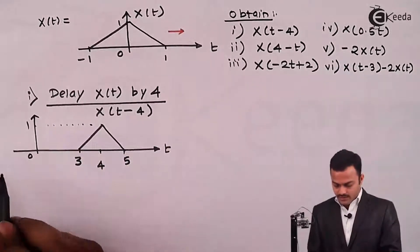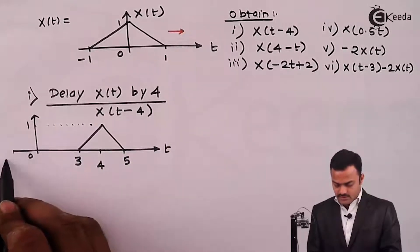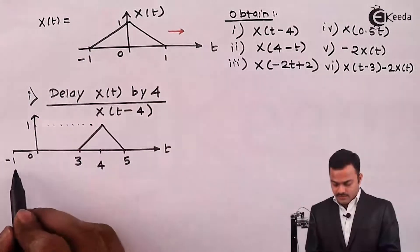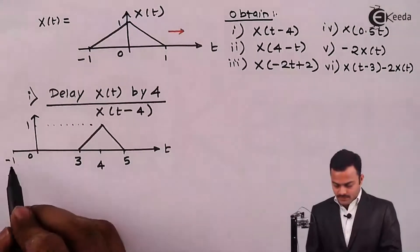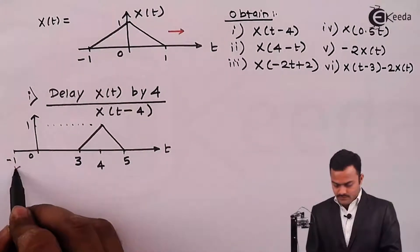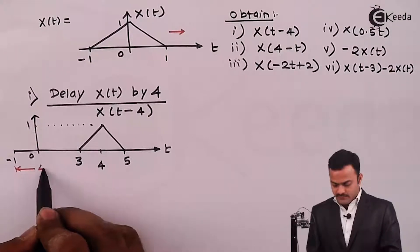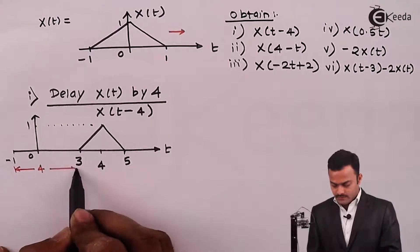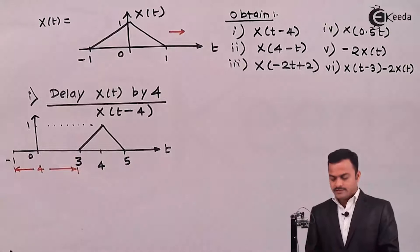So what we have done — the signal was started from minus 1, but now because of this shift it will shift by 4 units. This is what X of t minus 4 is.